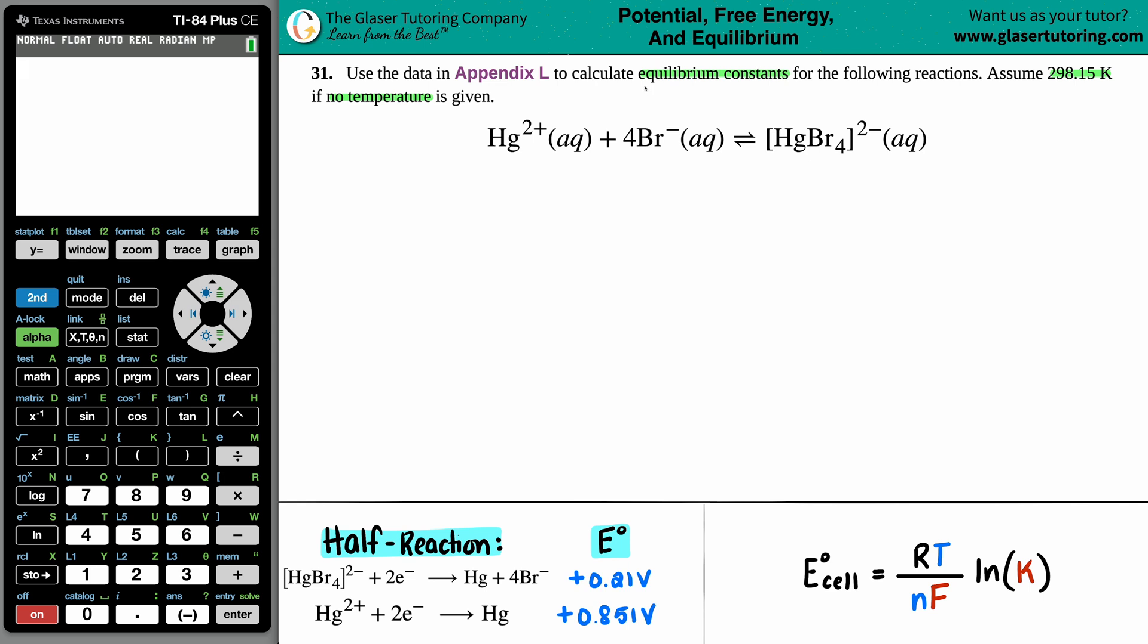Which is Hg2+ aqueous plus 4Br- aqueous, which comes to equilibrium with HgBr4 2- aqueous. So we're trying to ultimately solve for an equilibrium constant, that's a K value. And the only number values that they give us is to look in the back of the textbook in Appendix L. And Appendix L leads me to cell potentials, which are E values. And from E values, you could always get an E cell value.